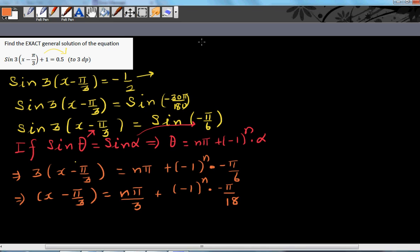So I'll do the next working here. This implies you can say x is equal to, I'm going to add pi by 3 to both sides. So this will become n pi by 3, this minus will make this plus into minus. So this is minus negative 1 raised to n times pi by 18 plus pi by 3.